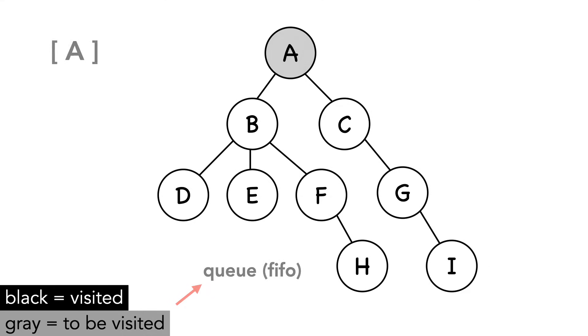Starting our algorithm, A is the first node we'll visit. We'll keep track of the queue in the top-left corner. We pop A from the queue and mark it as visited. We also add its adjacent nodes into the queue.